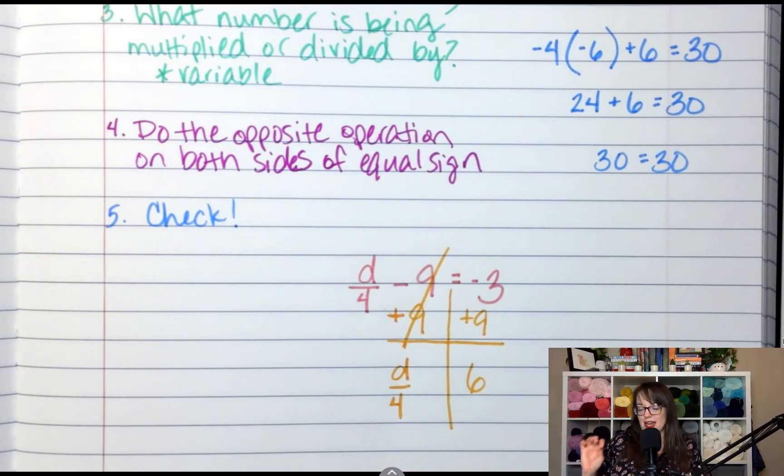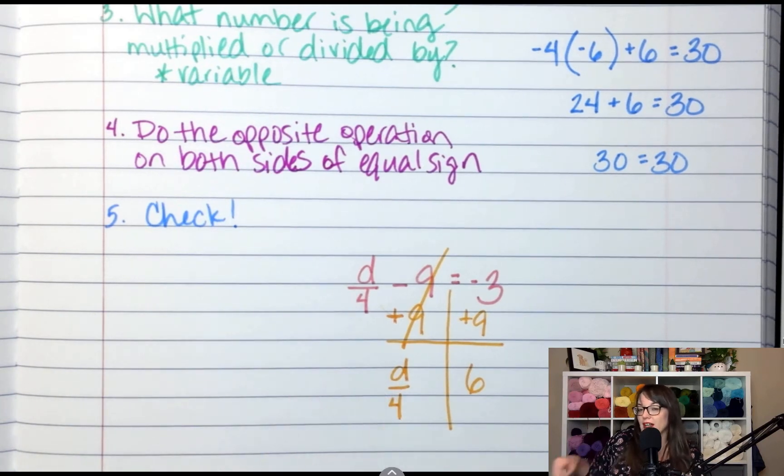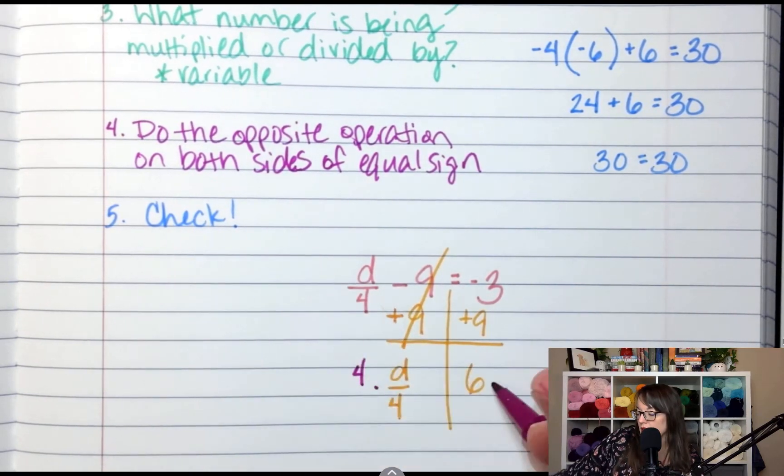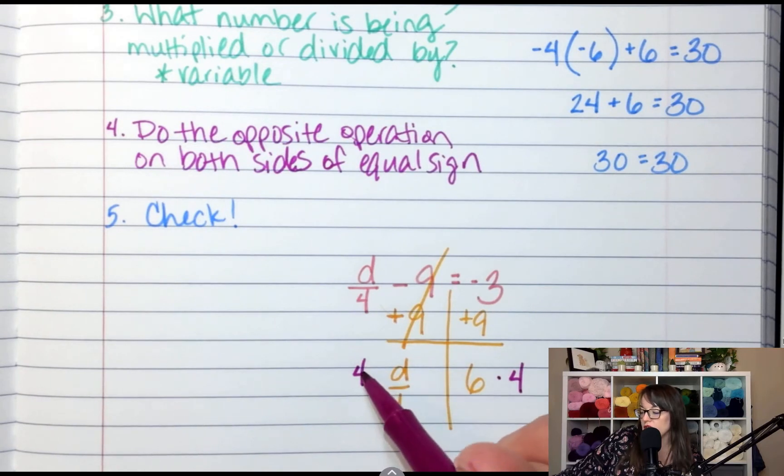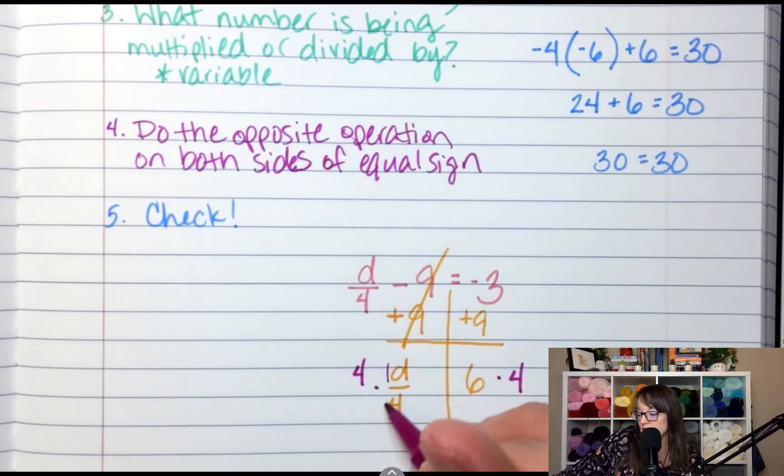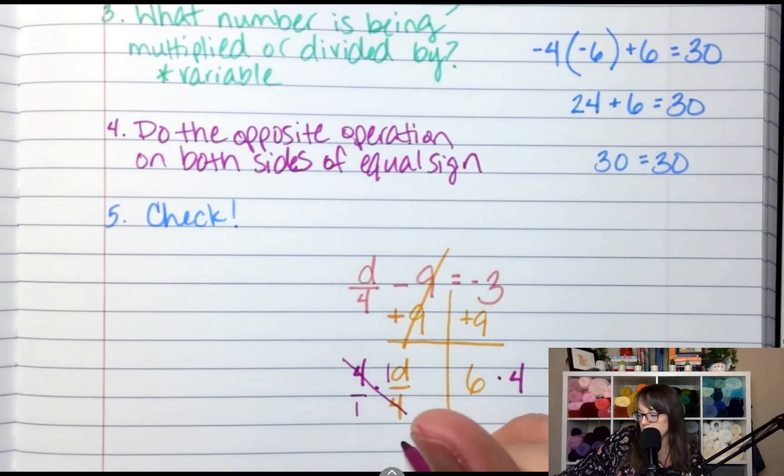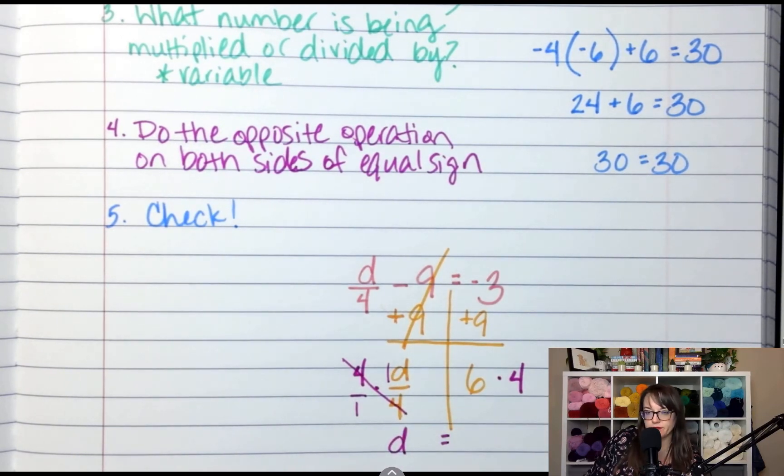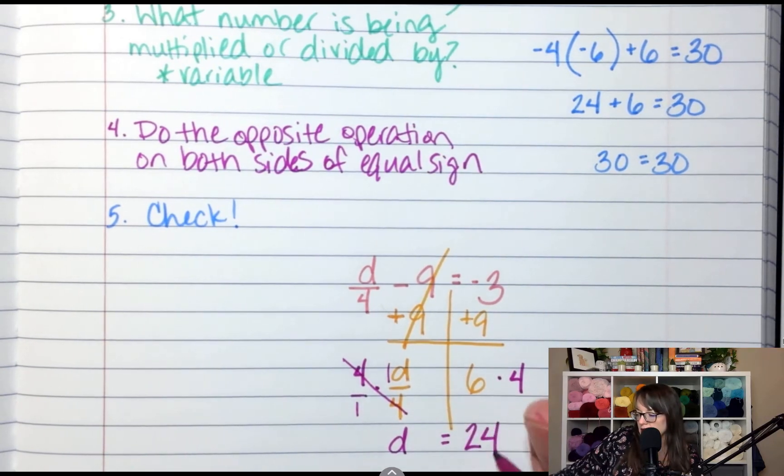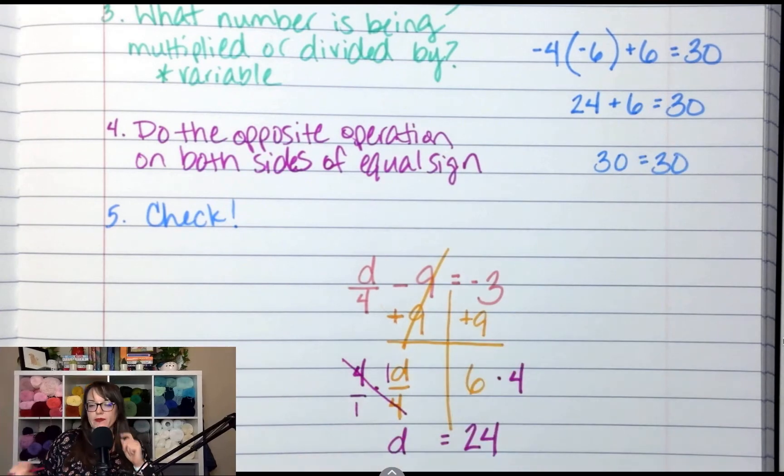Now, next step. I'm looking for multiplying and dividing. What number is being multiplied or divided by? I'm dividing by 4. This is d divided by 4. What is the opposite of dividing by 4? Multiplying by 4. So I'm going to multiply by 4 on both sides. This becomes 4 times 1, because this is 1d, and that's over 1. 1 times 4 is 4. So you end up with 4 over 4, which equals 1. So we have d over here. What is 6 times 4? 24. So d is 24.